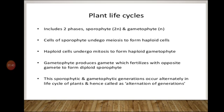Plant Life Cycle includes 2 phases: the Sporophytic phase and the Gametophytic phase. The Sporophyte phase is diploid, shown by 2N, and the Gametophyte phase is haploid, shown by N. Some special diploid cells of the Sporophyte divide by Meiosis to form haploid cells.